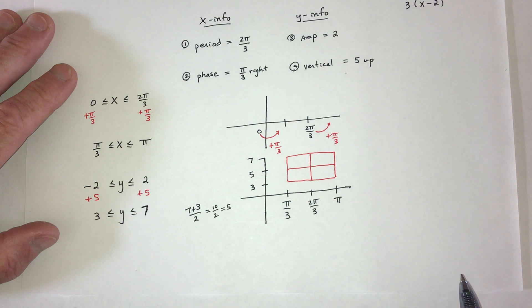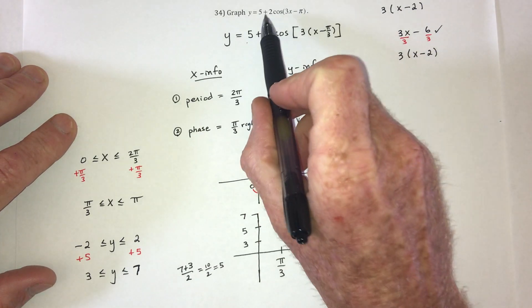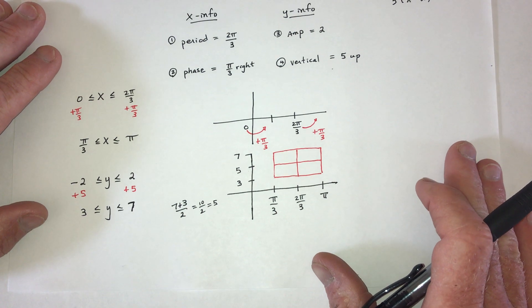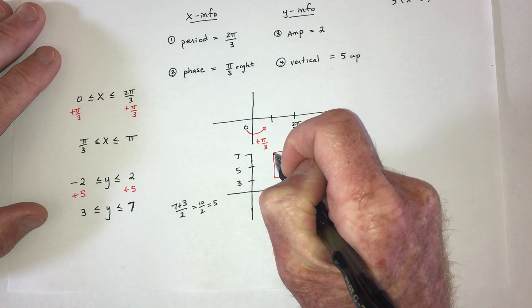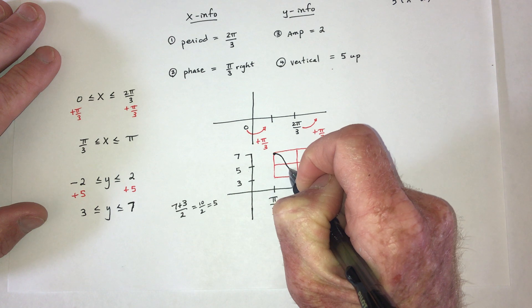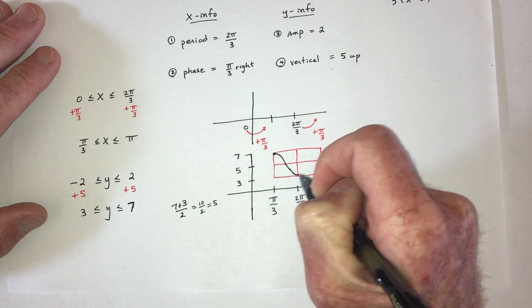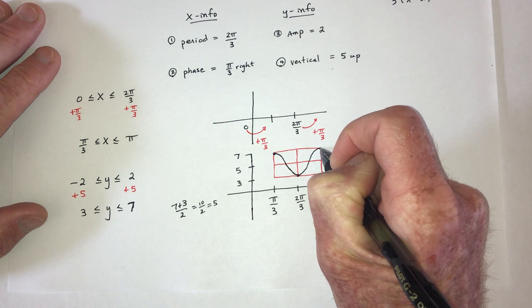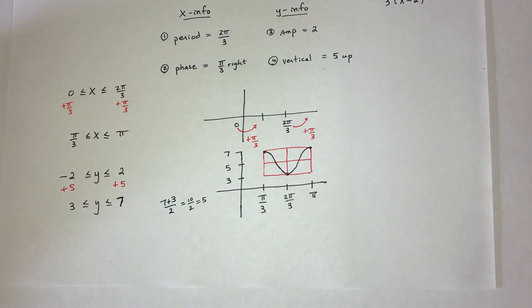Okay, now we're ready. So this says graph positive cosine. So the positive cosine graph starts at the top, goes down to the lowest point at the middle, and then goes back up to the top. And that should do it.